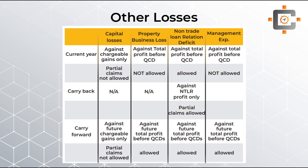Regarding group relief: assume by default that every loss type we discuss also has a group relief option. I won't separately mention group relief for each loss — it applies to all of them. Now, the non-trade loan relationship deficit has three options as shown on the screen: current year, carry back, and carry forward. These were already discussed in the previous chapter when we covered the four options for loan relationship deficit — current year, carry back, carry forward, and group relief.